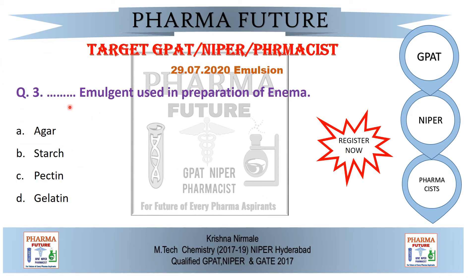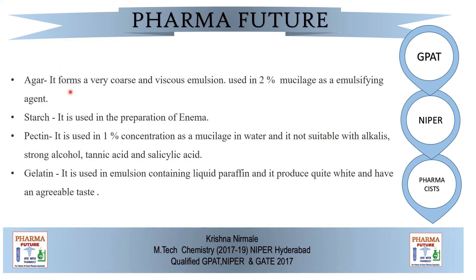Question 3: Which emulgent is used in the preparation of enema? Option A: agar. Option B: starch. Option C: pectin. Option D: gelatin. Agar forms a very coarse and viscous emulsion and is used at 2% concentration. Starch is used in the preparation of enema — making it the correct answer. Pectin is used at 1% concentration as a mucilage; it is not suitable with alkali, strong alcohol, tannic acid, or salicylic acid. Gelatin is used in emulsions containing liquid paraffin, producing a white emulsion with an agreeable taste.